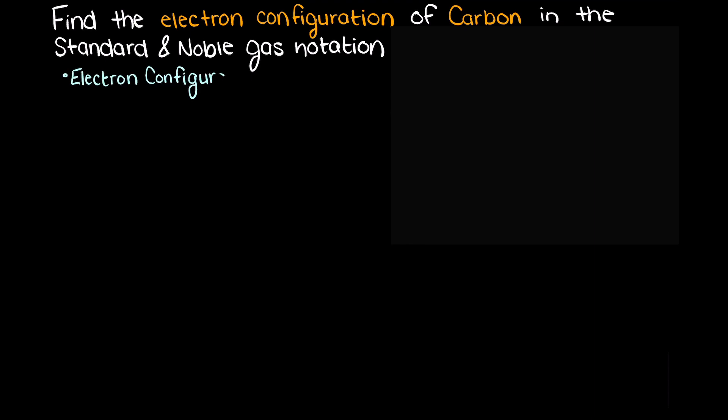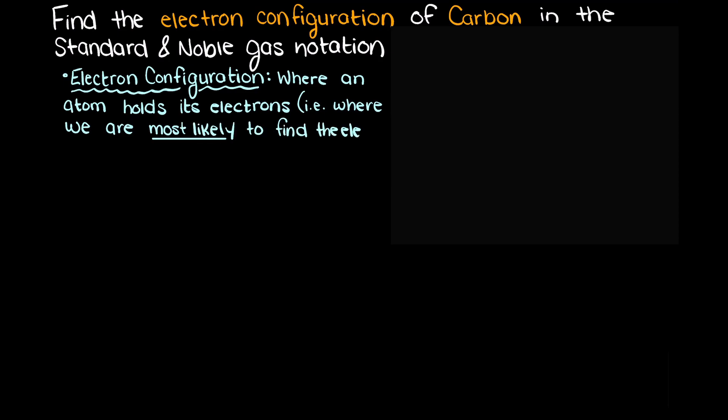When finding the ground state electron configuration of an atom, we are being asked where does this atom place its electrons, i.e. what shells and orbitals are its electrons most likely to be found in?